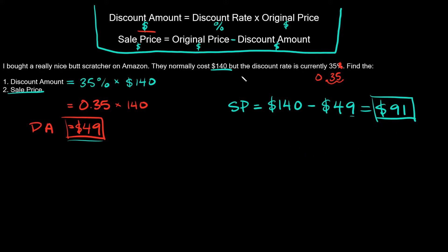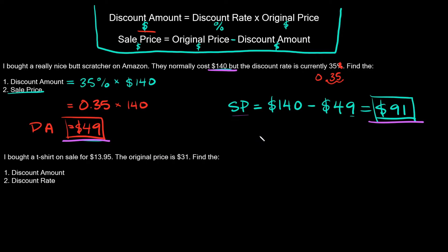To recap: the butt scratcher originally cost $140, but it was discounted an additional $49 — that's the discount amount — so I only had to pay $91, which is the sale price.